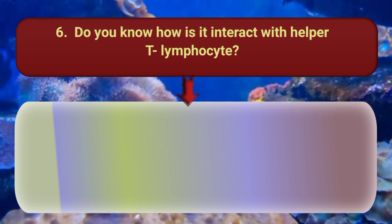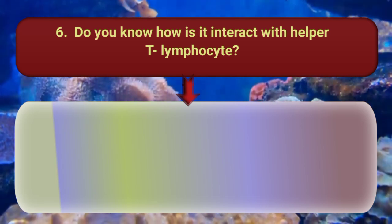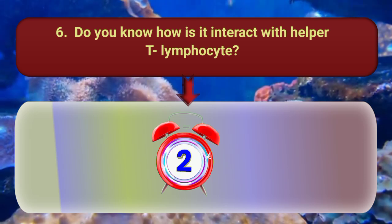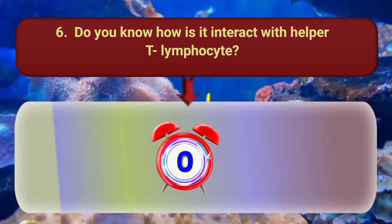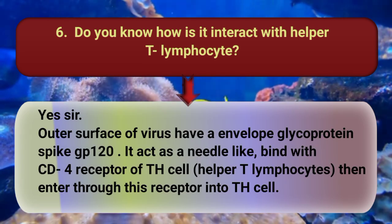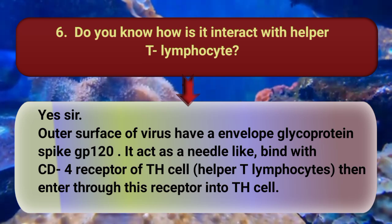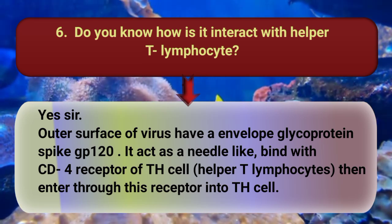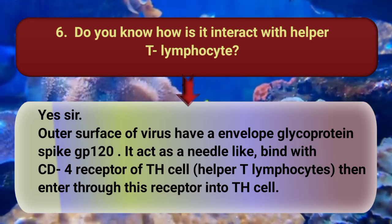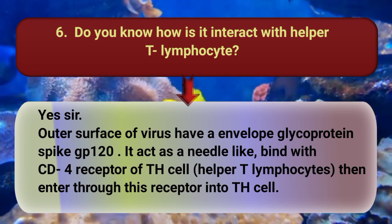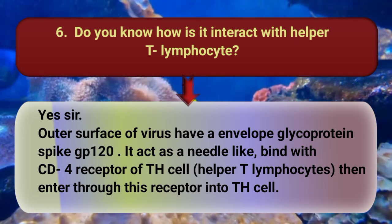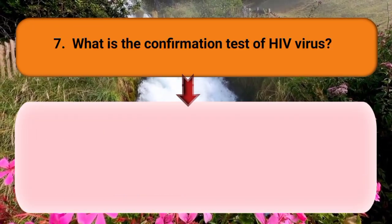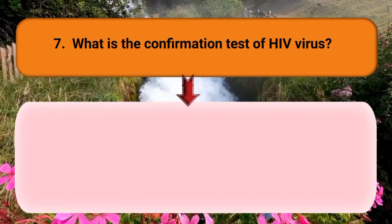Do you know how HIV interacts with helper T lymphocytes? The outer surface of the virus has an envelope glycoprotein spike GP120. It acts like a needle, binds with the CD4 receptor of the T-helper cell, and then enters through this receptor into the T-helper cell.